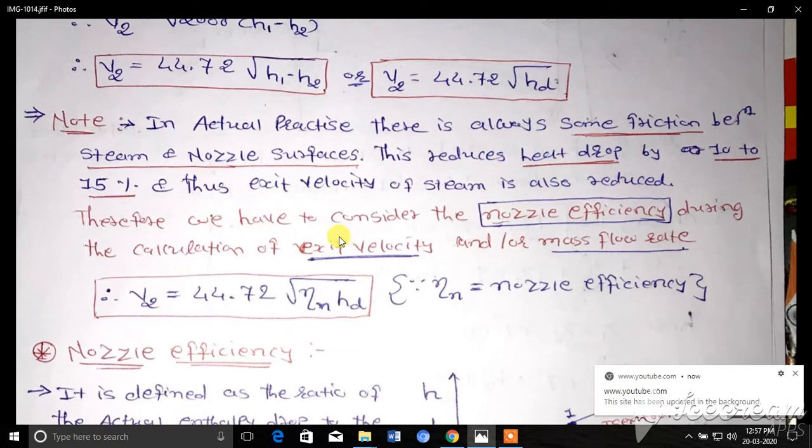Therefore we have to consider the nozzle efficiency during the calculation of exit velocity or mass flow rate. So V2 equals 44.72 times the square root of eta n times HD, where eta n is the nozzle efficiency. Let's understand what is nozzle efficiency and how we can derive it.